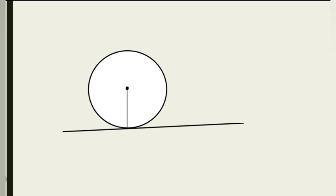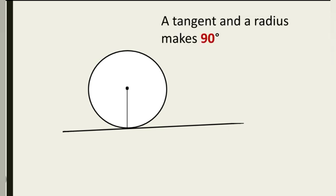Rule number 6: a tangent and a radius make 90 degrees. In this diagram the horizontal line is a tangent and the vertical line is a radius. A tangent is a line drawn to touch one specific point on the circle, and a radius is a chord arising from the center to any point on the circumference. Where the tangent meets the radius, 90 degrees is formed. Use these properties whenever you encounter a tangent meeting a radius.